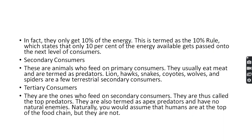Secondary consumers depend on primary consumers and generally eat meat — these are predators. Examples include lions, hawks, snakes, foxes, wolves, and spiders. Tertiary consumers depend on secondary consumers and are the top predators, also called apex predators. Apex predators have no natural enemies. When they die — whether by accident or old age — they are decomposed by decomposers. No other organism naturally eats them. It is said that humans are considered to be at the top of the food chain.